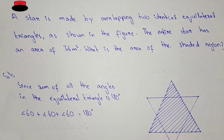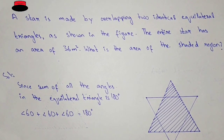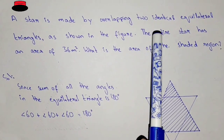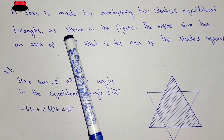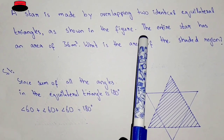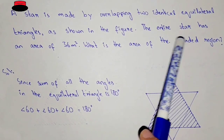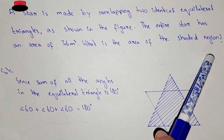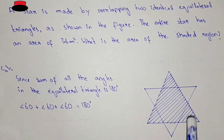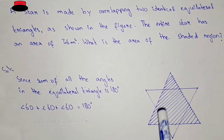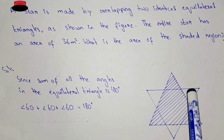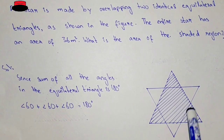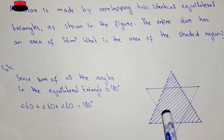Hello, what's up guys, welcome to the new video. In this video we have the question: a star is made by overlapping two identical equilateral triangles as shown in the figure. The entire star has an area of 36 square meters. We have to find the area of the shaded region. This is the star, and these are the two equilateral triangles — this is the shaded area we need to find.